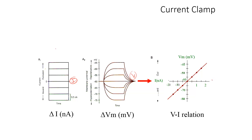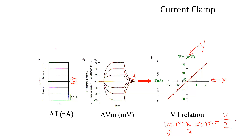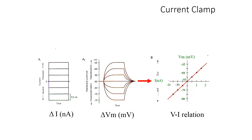In this case, because our independent variable is current, current goes on our x-axis, and we're measuring the change in membrane potential, so that's our dependent variable and it goes on our y-axis. If we think about the equation for a line and substitute x as current and y as membrane potential, then our slope is equal to V over I. And if you go back to Ohm's law, you'll see that V over I is resistance — so the slope of this relation is resistance. Therefore, R is equal to ΔV over ΔI.